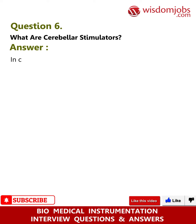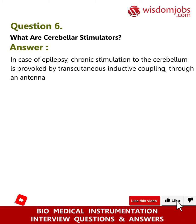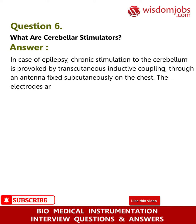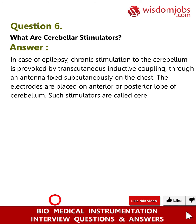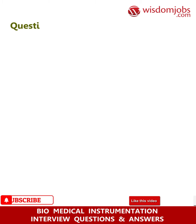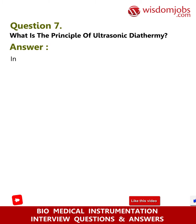Question 6: What are cerebellar stimulators? Answer: In cases of epilepsy, chronic stimulation to the cerebellum is provoked by transcutaneous inductive coupling through an antenna fixed subcutaneously on the chest. The electrodes are placed on the anterior or posterior lobe of the cerebellum. Such stimulators are called cerebellar stimulators.